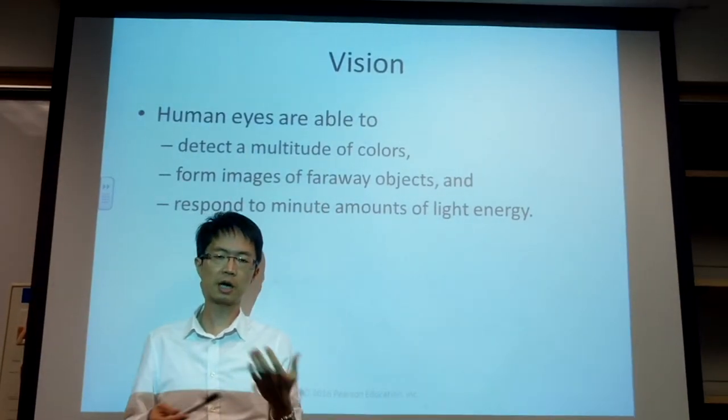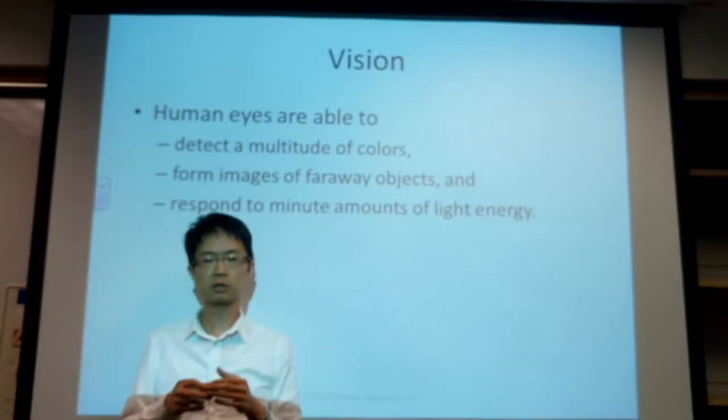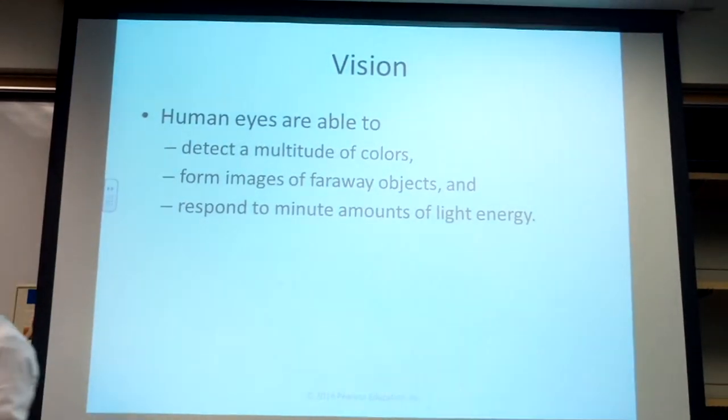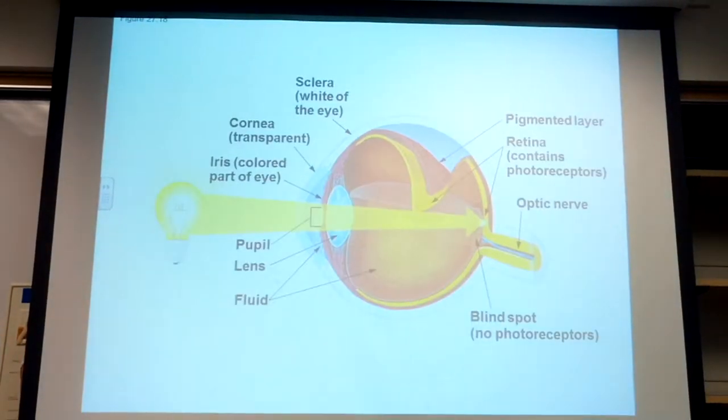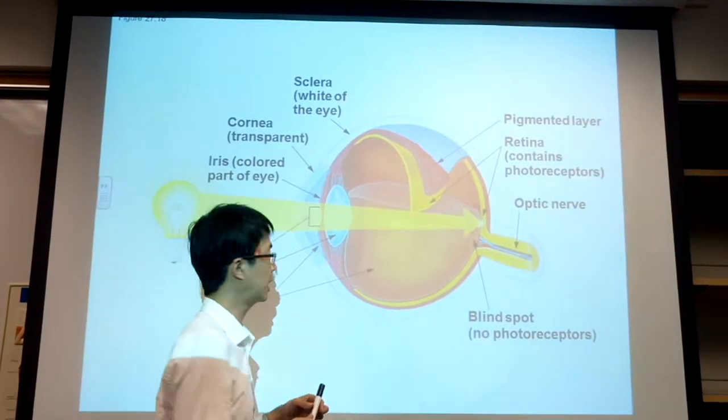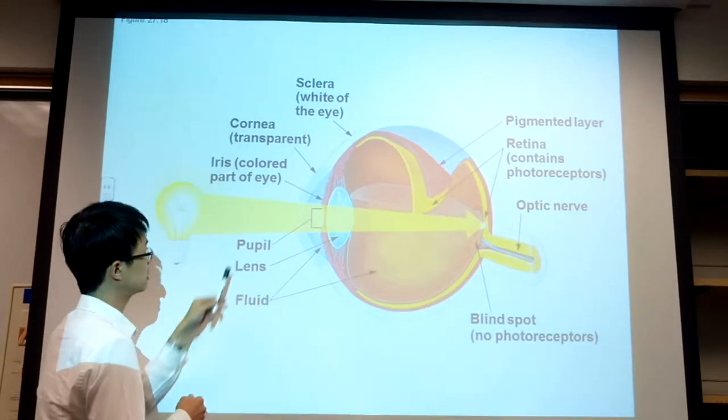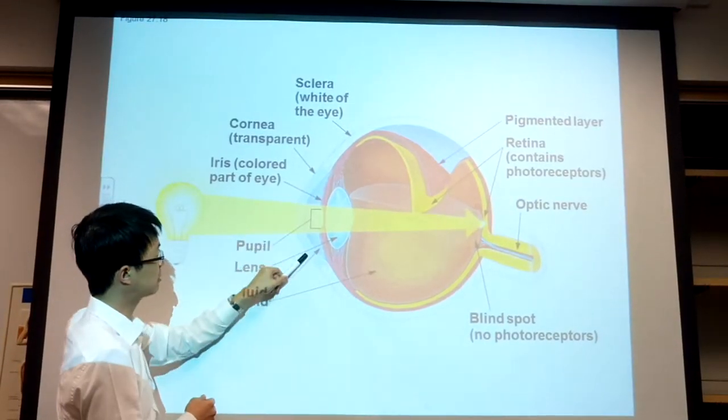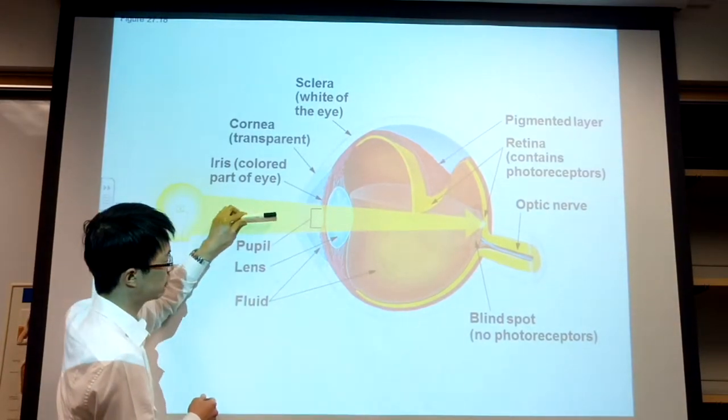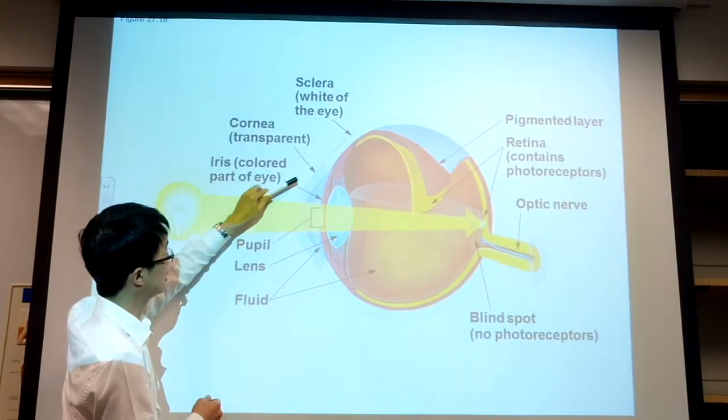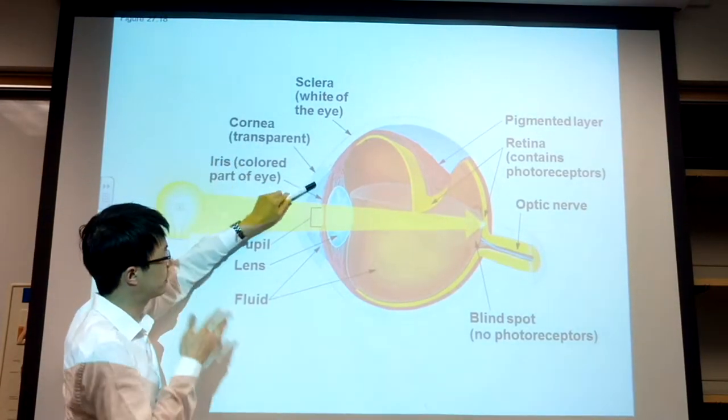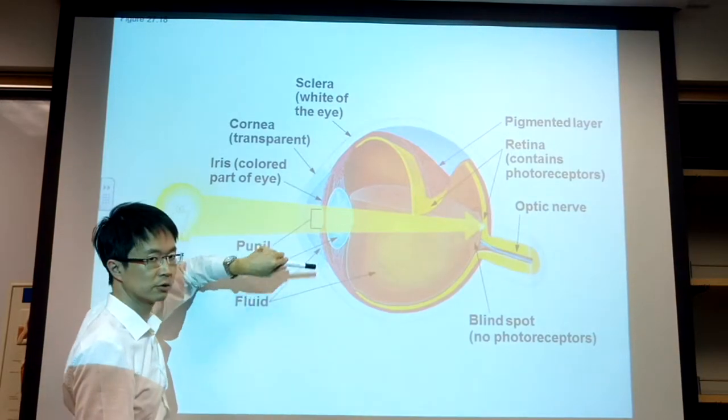This tells you the basic anatomy of the eye. The surface, the outer surface—when light is going into the eye, the first structure that it hits is the cornea. The cornea is transparent; it is made of some transparent cells.